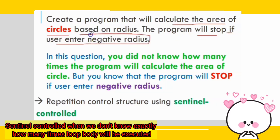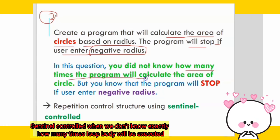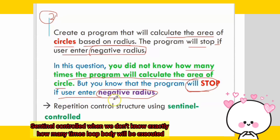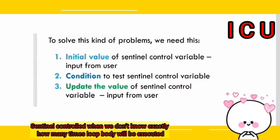For the second question, you do not know how many times the program will calculate the area of a circle. But you know that the program will stop when the user enters a negative radius. So this repetition control structure uses sentinel control.